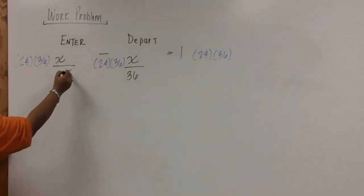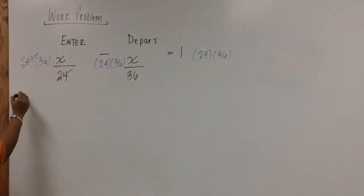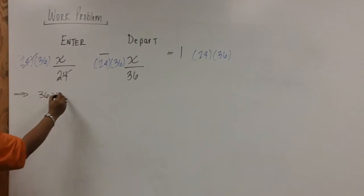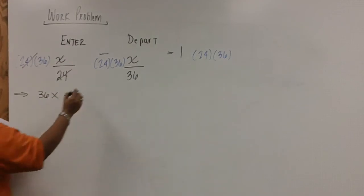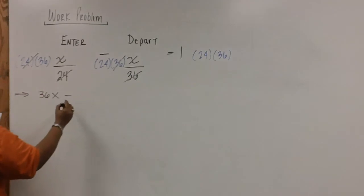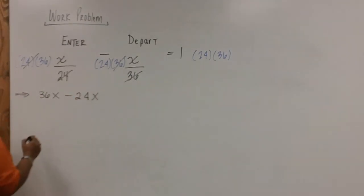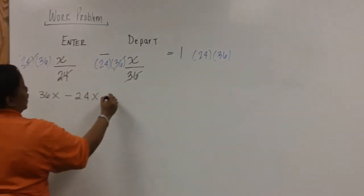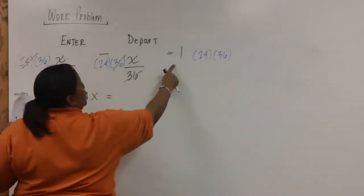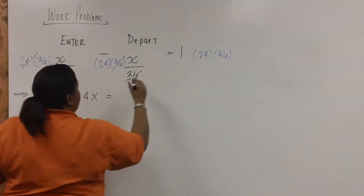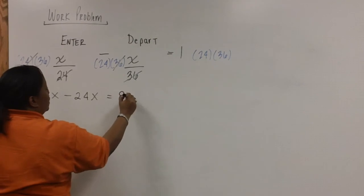Notice that the 24s cancel, leaving us with 36x minus the 36 cancels, leaving us with 24x. Equal to 1 times 24 times 36 is 864.